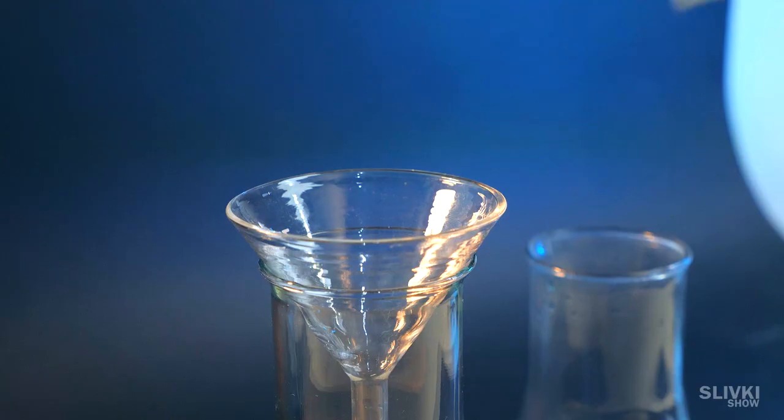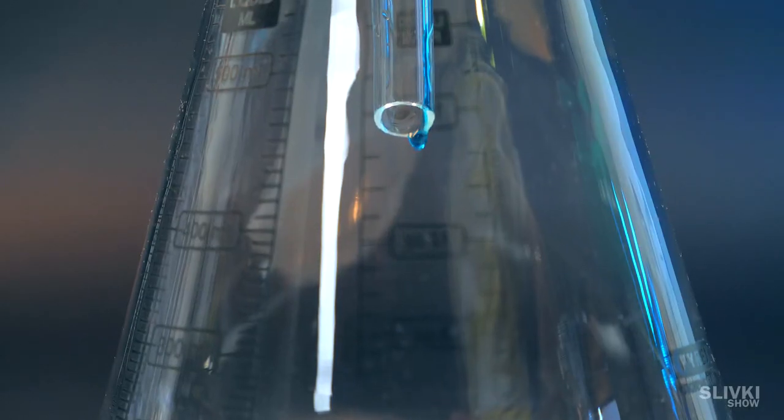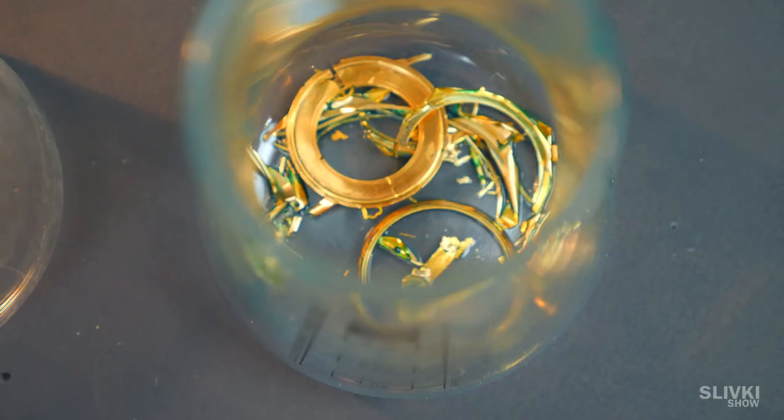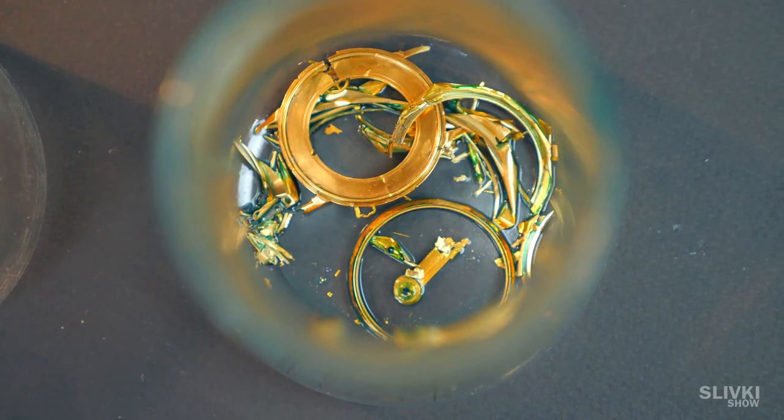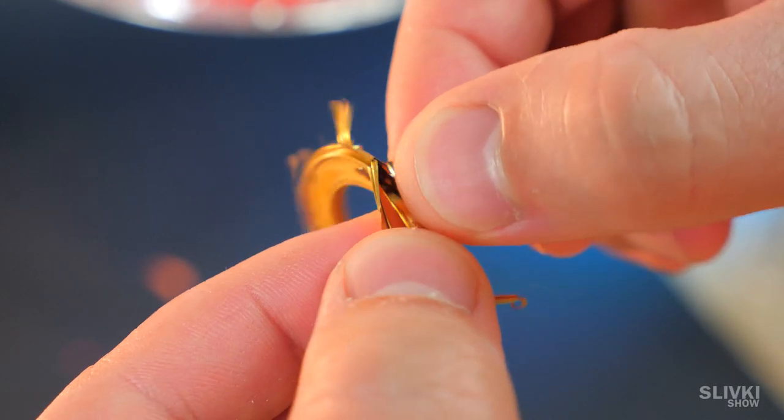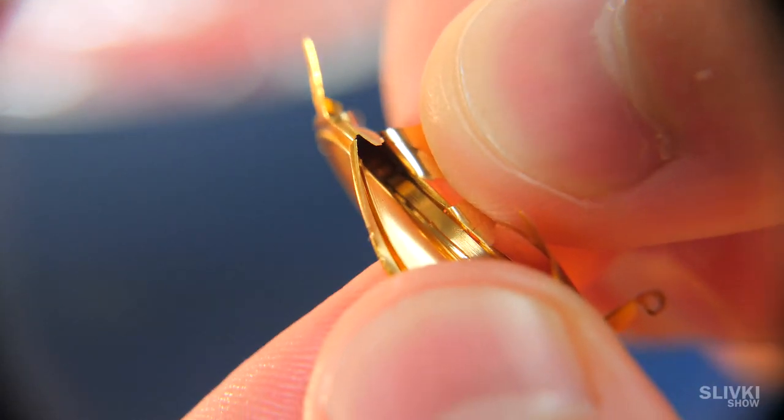Now we get out the flask with a funnel and pour our substance through a filter, so by chance any particles of gold left there. Gold that's left on the bottom we need to rinse with water and carefully clean from acid. Pay attention that acid destroyed only the inner part of the casing, which was from different metal, leaving only the gold shell.